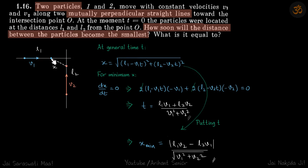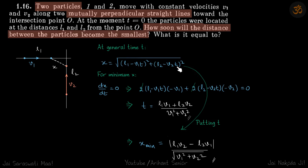After some time, one particle reaches a new position and the other does too, so the distance between them is x. We need to find the time when x is smallest. Taking a general time t, this particle would have moved forward by distance v1*t, so the remaining gap is (l1 - v1*t). Similarly, in time t this particle moves v2*t, so the remaining gap is (l2 - v2*t).